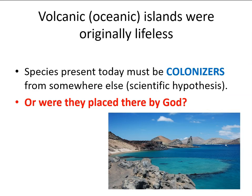But let's return to the origin of the islands. They were volcanic and originally lifeless, which sets up a puzzle: the species present today must be colonizers from somewhere else — or perhaps they were placed there by God, as Christian thinkers would have it. If you encounter these volcanic islands that originally were lifeless but now have various species on them, it raises the question: where did these animals and plants come from? Here we have two proposals — a scientific idea and the Christian idea.